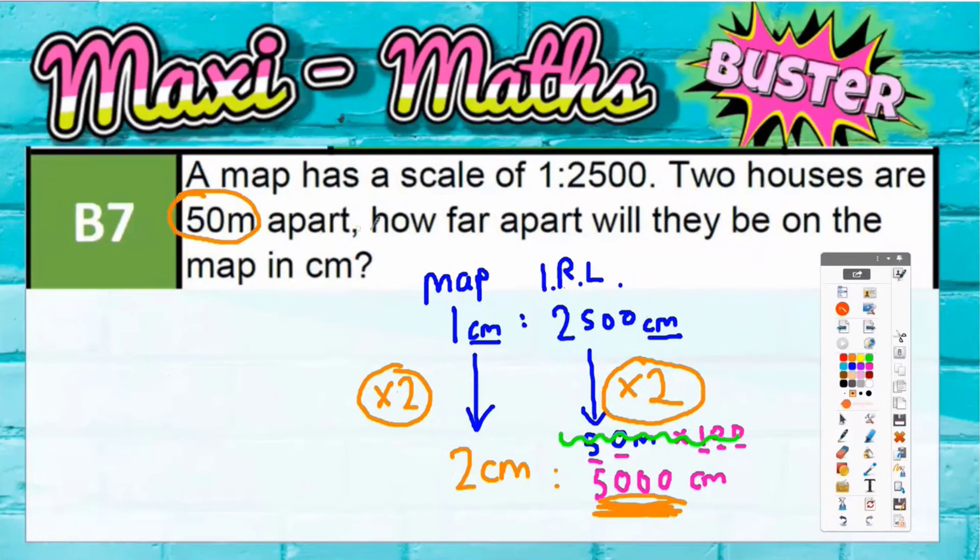And 5,000 centimeters is actually the 50 meters that we're talking about. So how far apart will it be on the map in centimeters? The answer is just two centimeters.